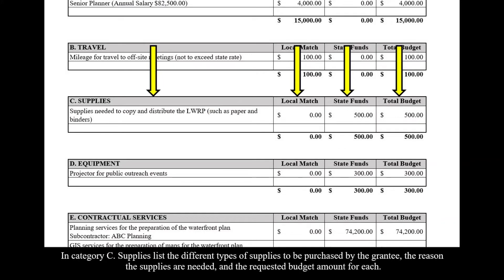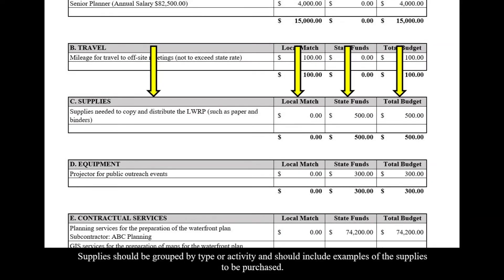In Category C, Supplies, list the different types of supplies to be purchased by the grantee, the reason the supplies are needed, and the requested budget amount for each. Supplies should be grouped by type or activity and should include examples of the supplies to be purchased.